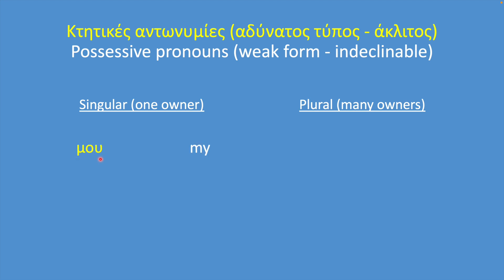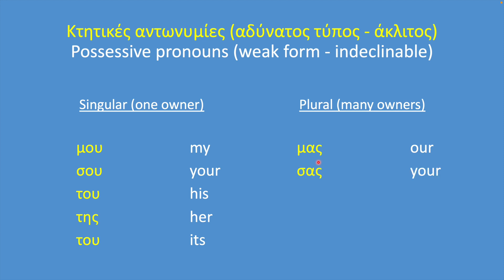The weak possessive pronouns are: μου — my; σου — your; του — his; της — her; του — its; μας — our; σας — your (plural); τους — their (masculine); τους — their (feminine).